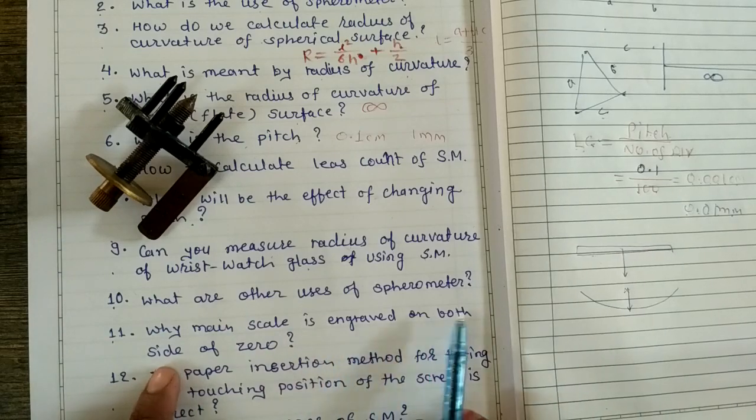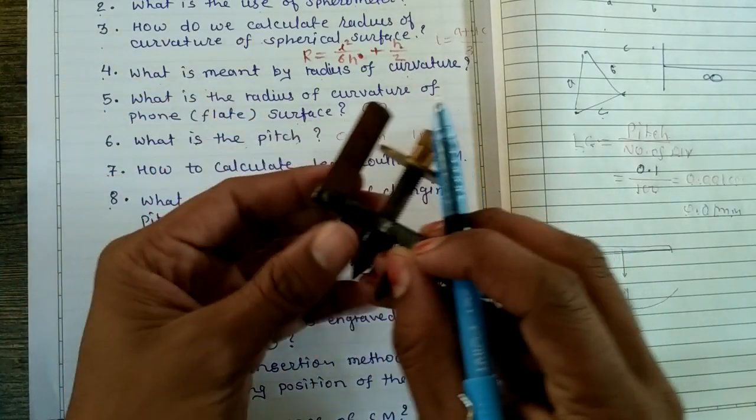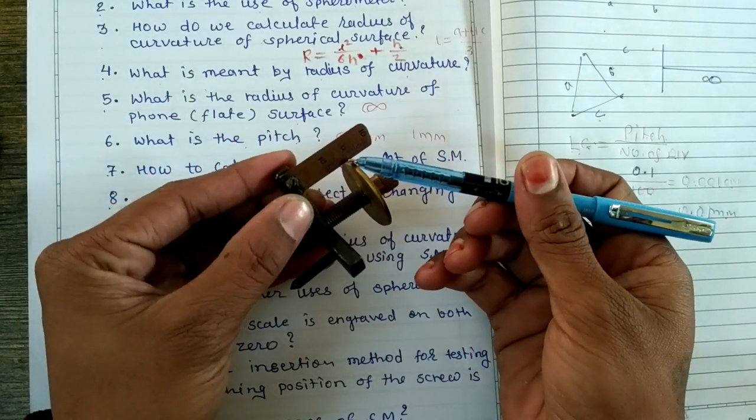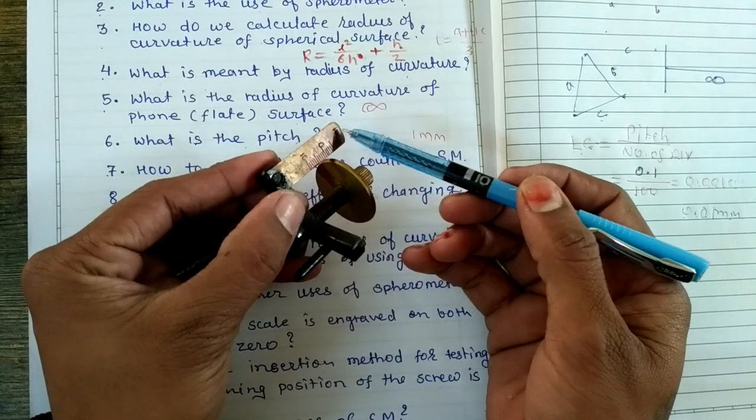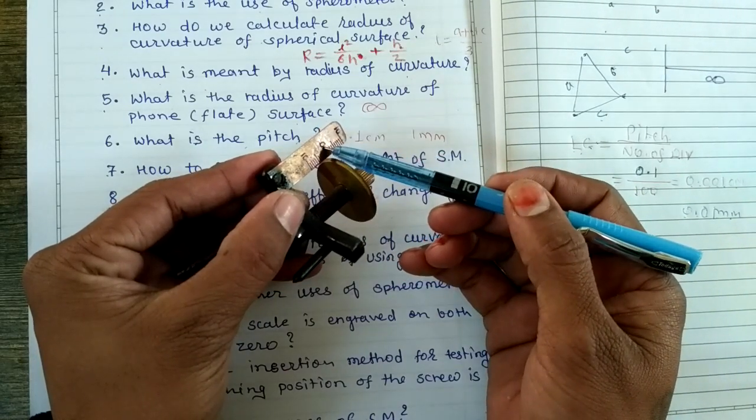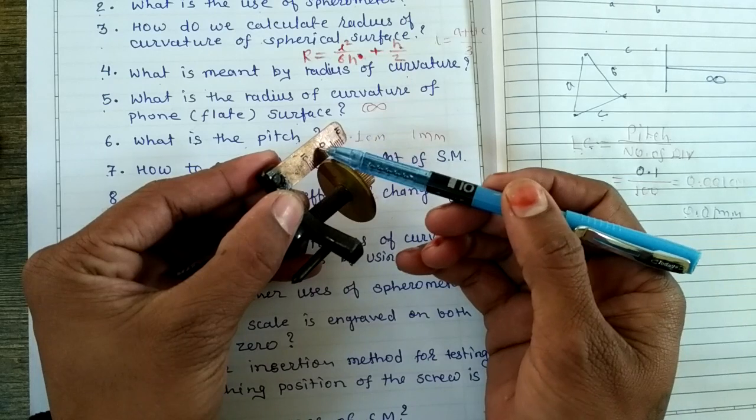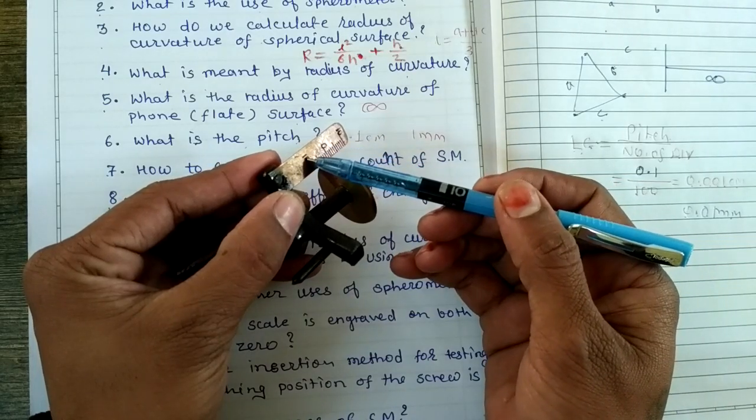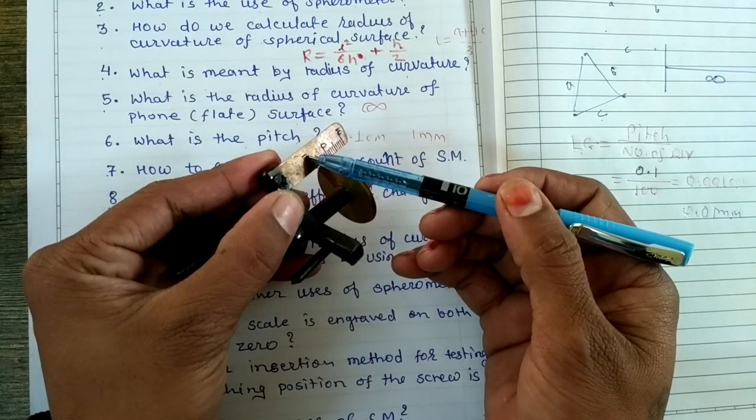Why is the main scale engraved on both sides of zero? The scale is engraved on both sides - with this we can determine height. If you rotate it in this direction, we can determine the depth.